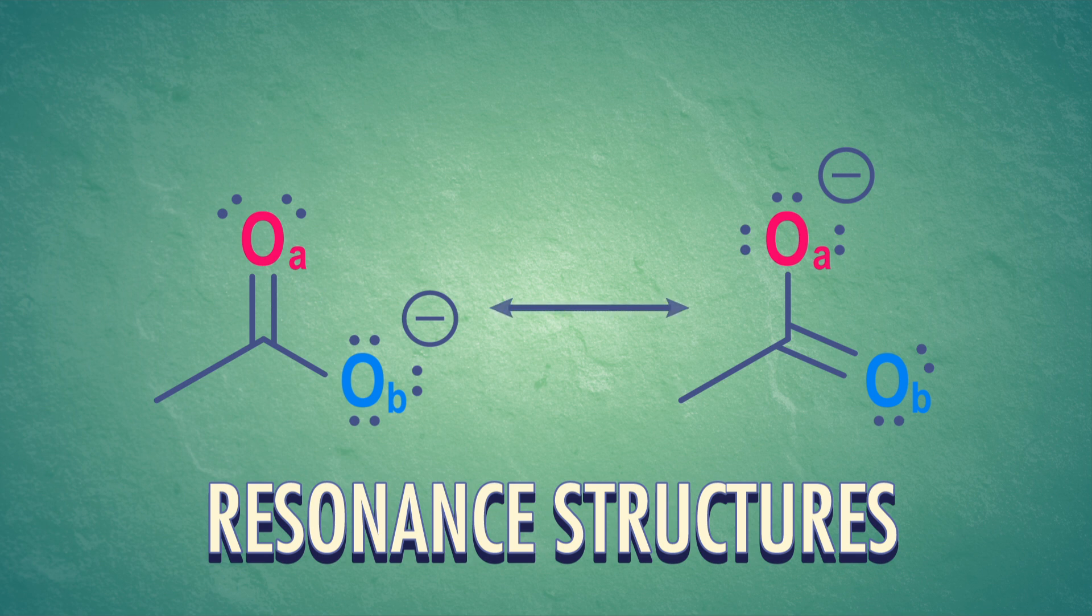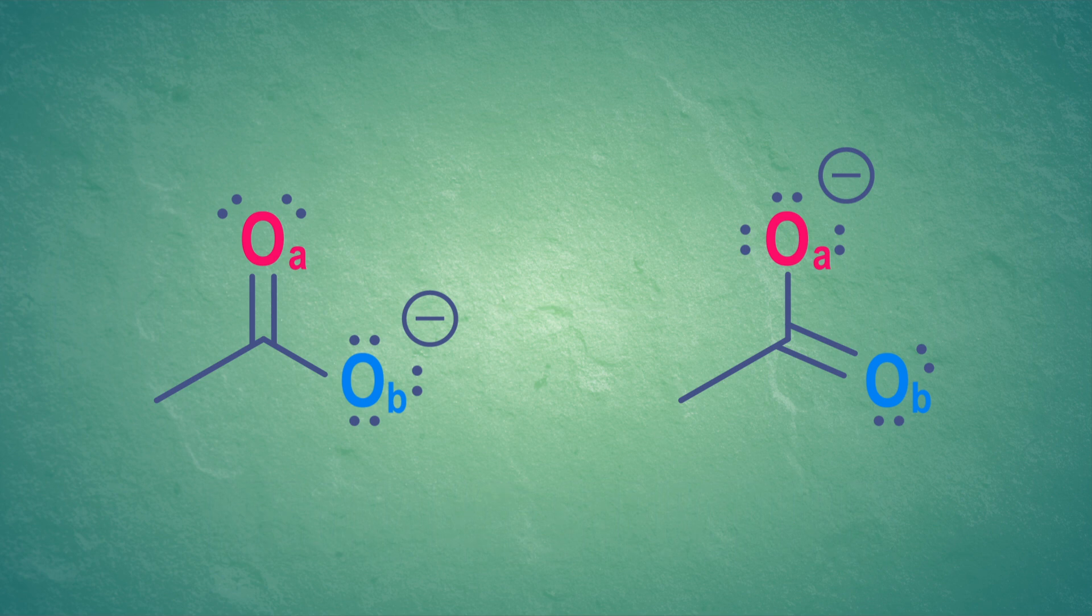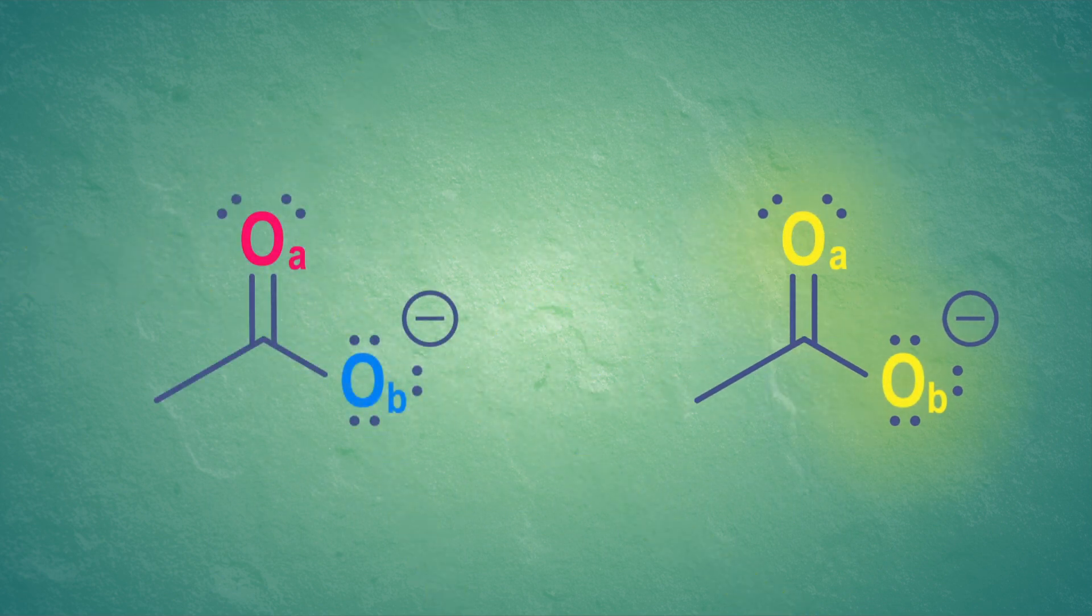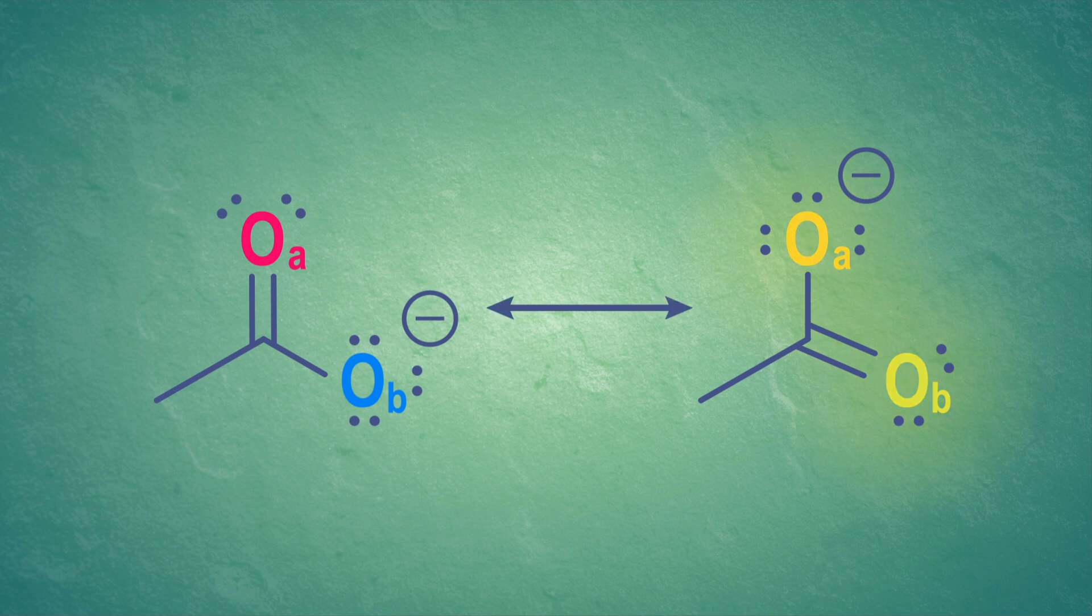We indicate multiple resonance structures with a resonance arrow, which is an arrow with arrowheads on both sides. And we're not flipping the acetate ion around to get its two resonance structures – the atoms are staying in place. We're actually changing where we show the electrons between the two oxygen atoms. Drawing resonance structures can help us understand where the electrons could be, but in real life things are a little mushier.